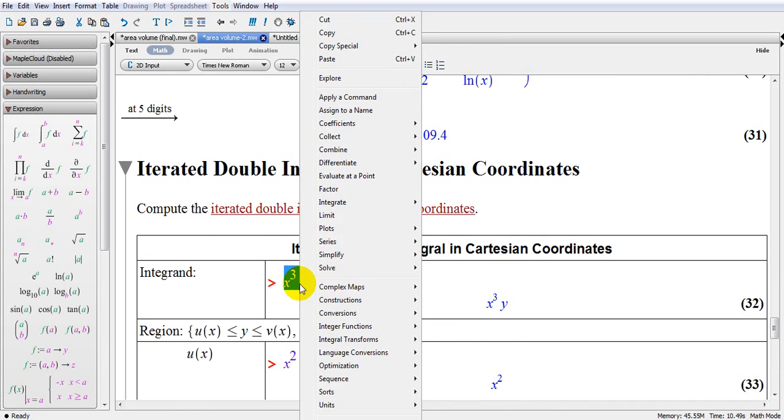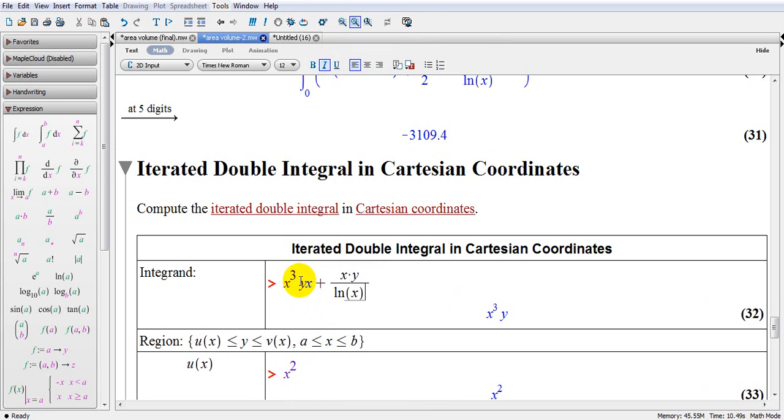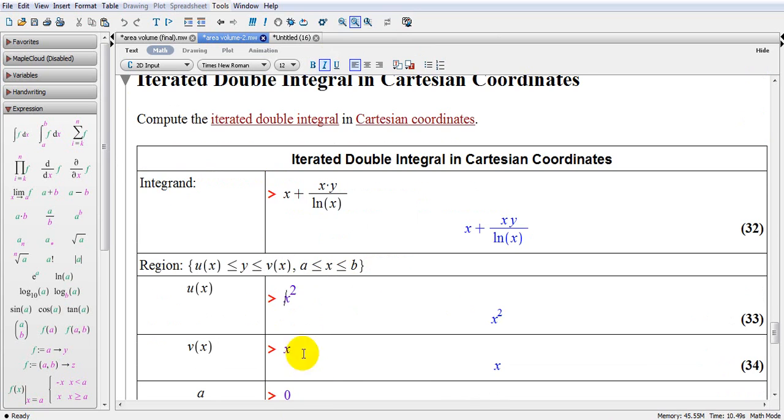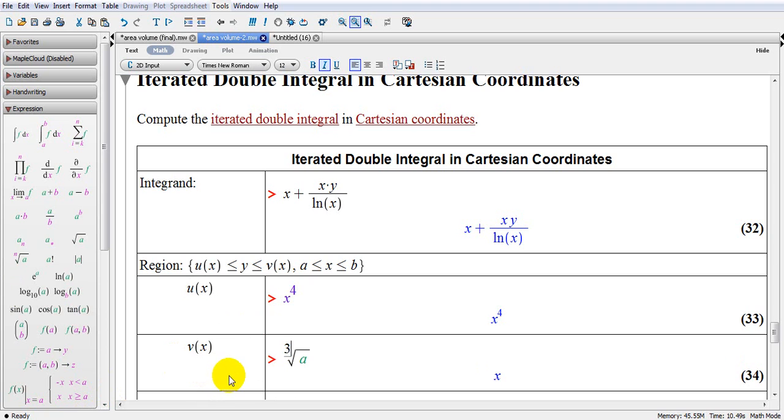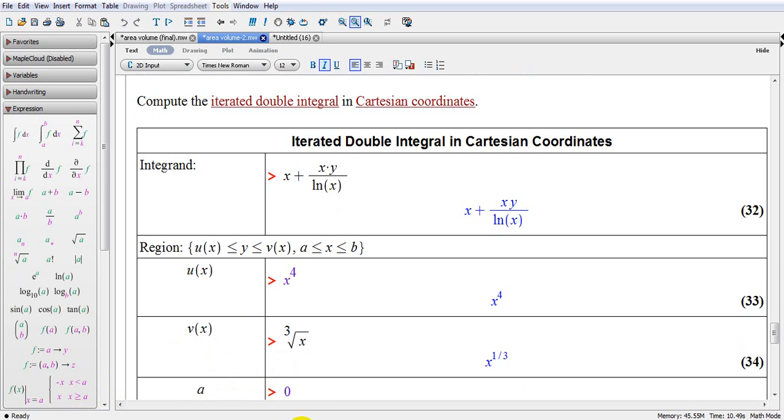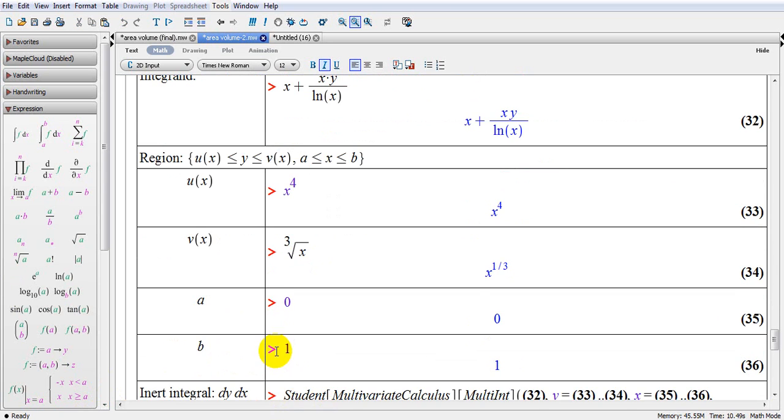So my integrand is the function I had. I better go here and delete this. Each time you add something, you press enter. This is my function. My Y changes from X to power 4 to root 3X. Enter. And my X changes from 0 to 3.